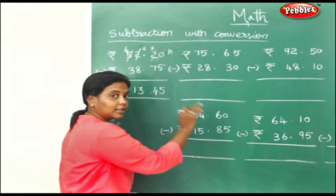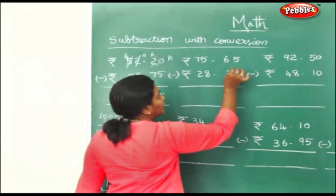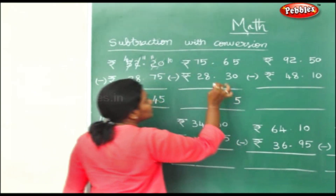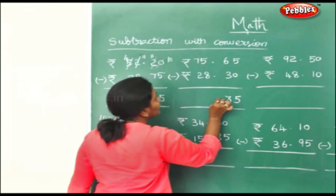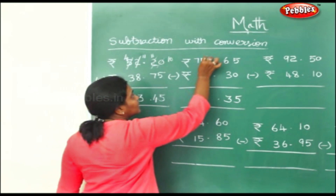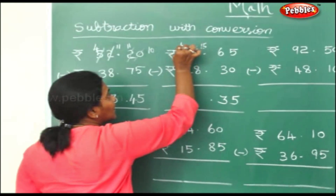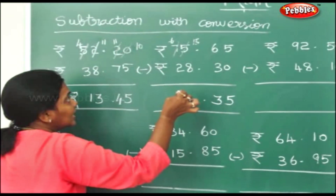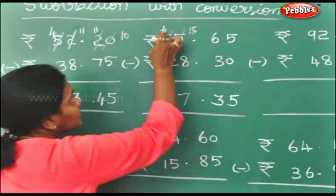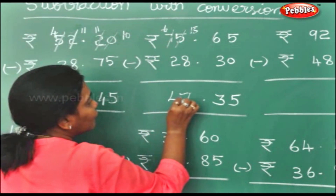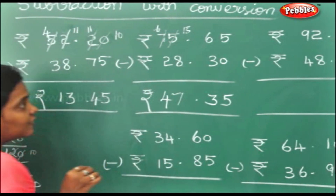Here, same way, we'll do it without conversion, just basic subtraction alone. 5, carry down. 6 minus 3 is 3. 5 minus 8 you cannot minus, so this becomes 15, this becomes 6. 15 minus 8 is 7. 6 minus 2 will be 4. So this is rupees 47 and 35 paise.